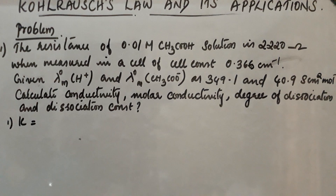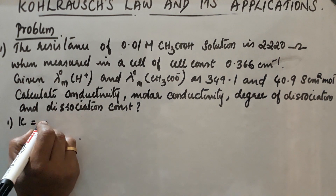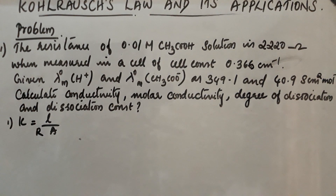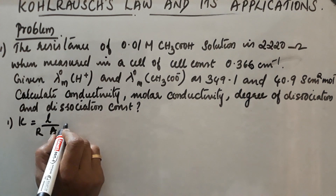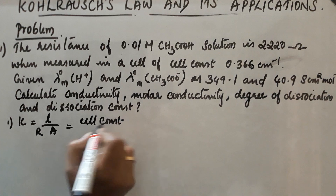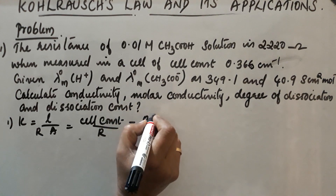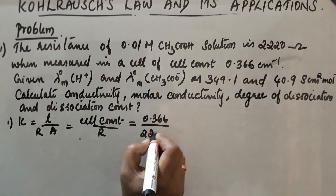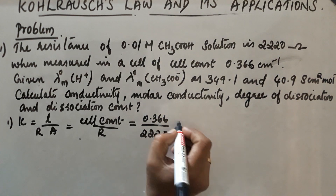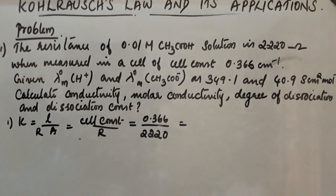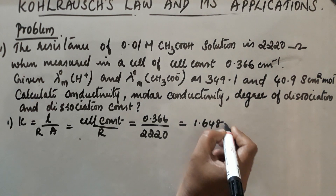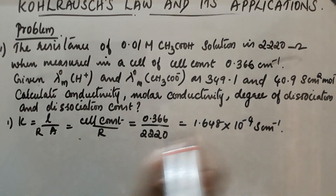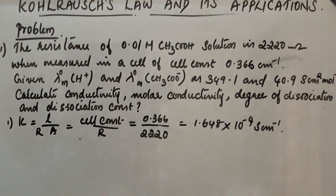First, conductivity κ = (1/R) × (L/A) = cell constant / R. Cell constant is 0.366 cm⁻¹ and R is 2220 ohm. So κ = 0.366 / 2220 = 1.648 × 10⁻⁴ S·cm⁻¹.